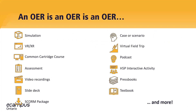What an OER can look like is vast — it doesn't have to look like just a common textbook. We have a lot of different OERs in the Open Library catalog. We've got a list of file and media types that continues to expand: from simulations to assessments, to common cartridge courses, podcasts, textbooks, video recordings, interactive activities, and VRs. OER is not just a book — there's much more to an OER than a format.